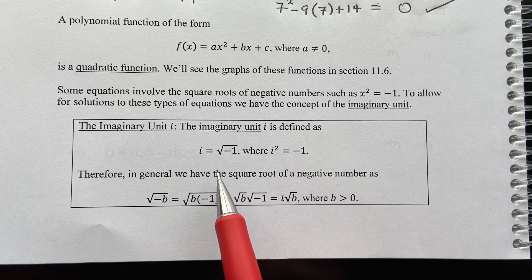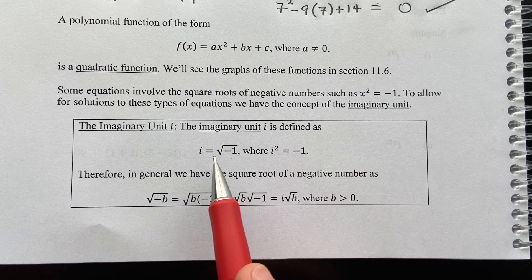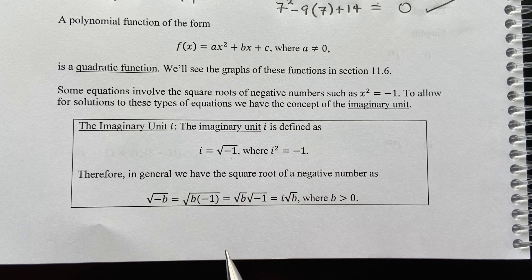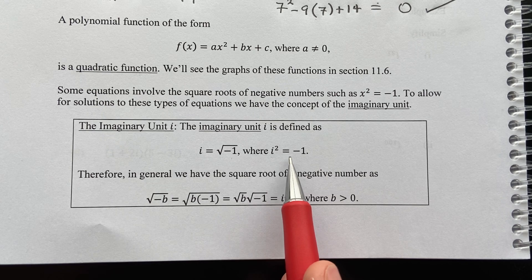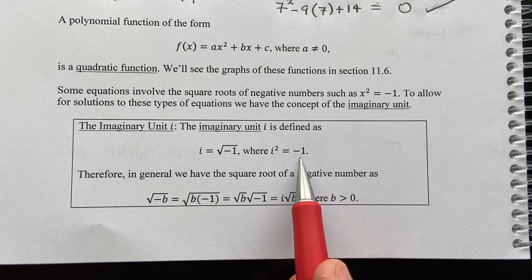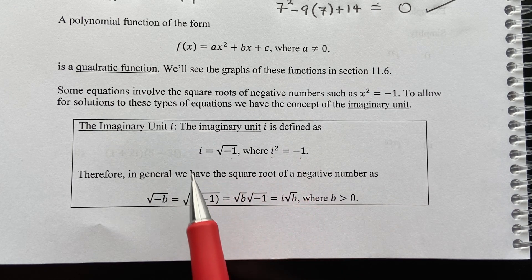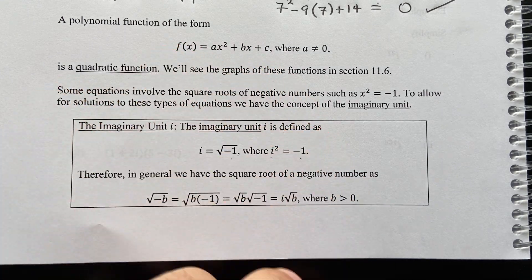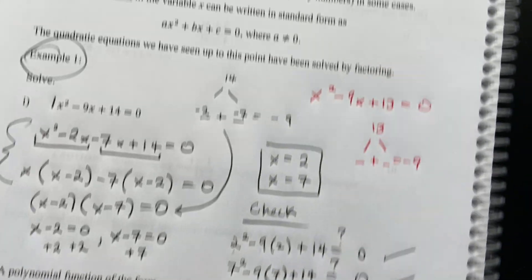We'll also need the imaginary unit in certain cases. Keep in mind that whenever you have the square root of a negative number, a factor of i comes out, and whenever you have i squared, that equals negative 1. We'll be using that imaginary unit definition within this section as well. On to page 103.